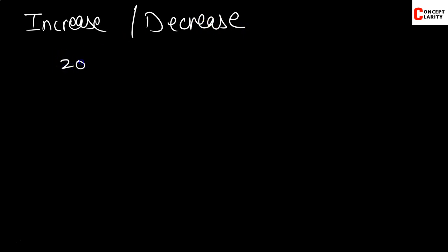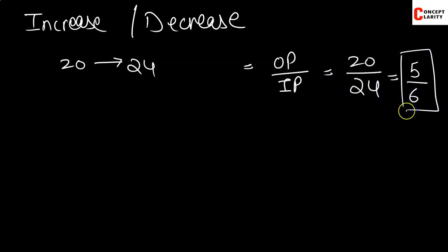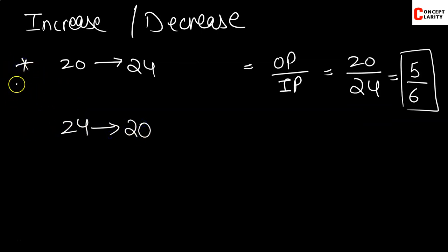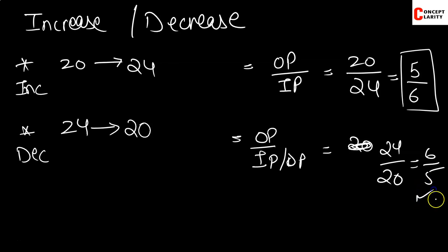For example, the price of an article was Rs. 20, and what will it be? 20 upon 24, so the ratio is 5 is to 6. And if before it was 24 and it became 20, the price is increasing — that is one scenario. In the second scenario, the price is decreasing: the original price upon the decreased price gives the ratio 24 upon 20, which comes out to be 6 is to 5. The ratio has increased because the denominator was smaller.